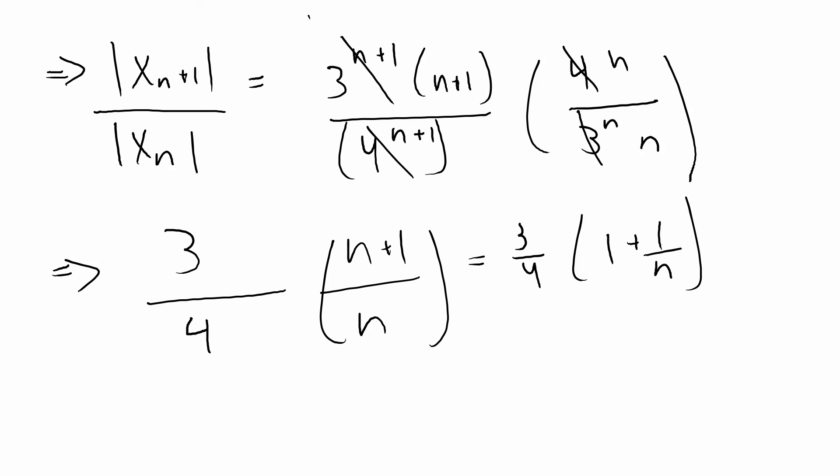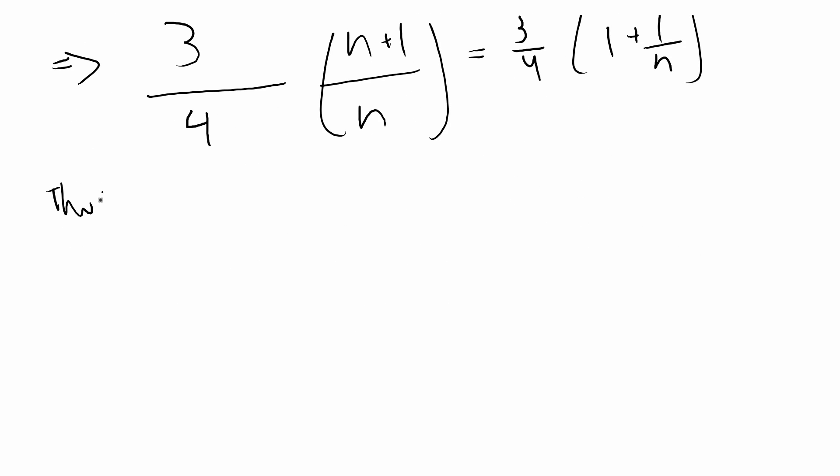So now we can take the limit of that, so we have thus the limit of the absolute value of x_{n+1} over the absolute value of x_n as n goes to infinity is equal to the limit as n goes to infinity of 3/4 times (1 + 1/n).